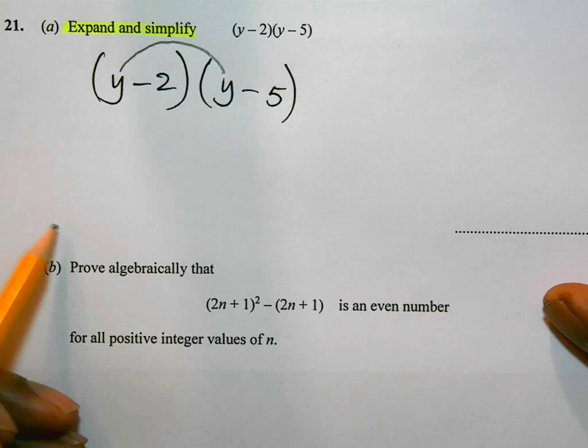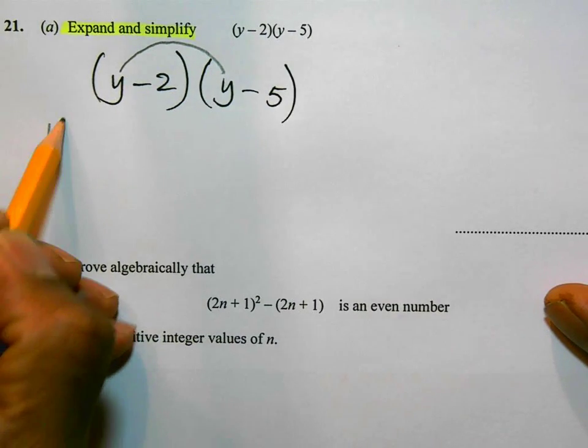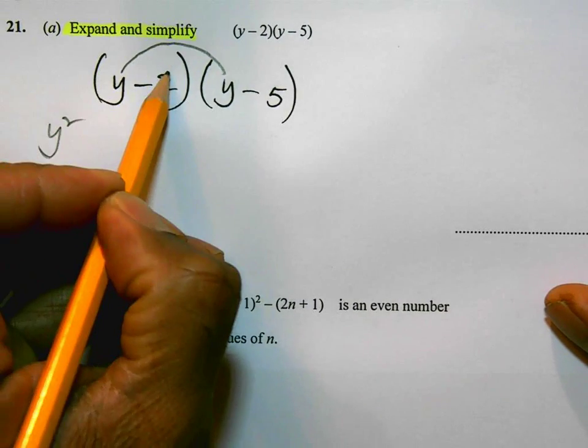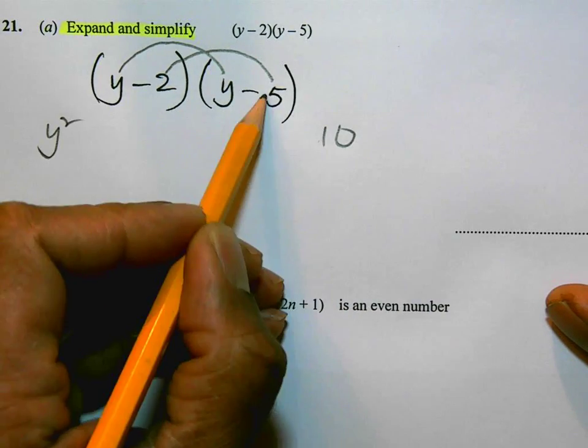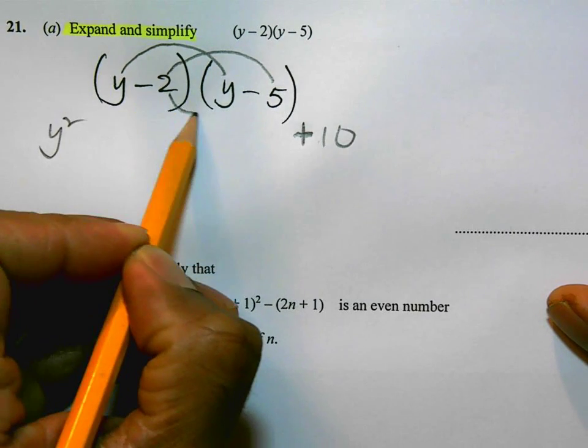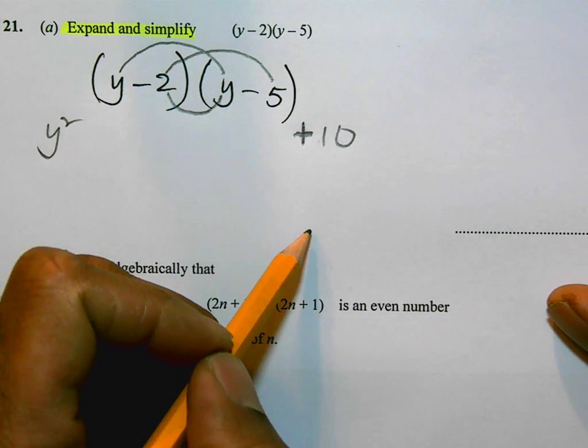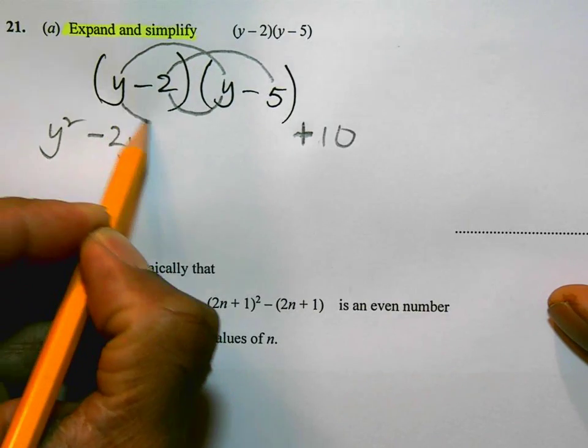y times y is y squared. 2 times 5 is 10. That's a minus times a minus, so this is going to be plus 10. In the middle, minus 2 times y is minus 2y. y times minus 5 is minus 5y.